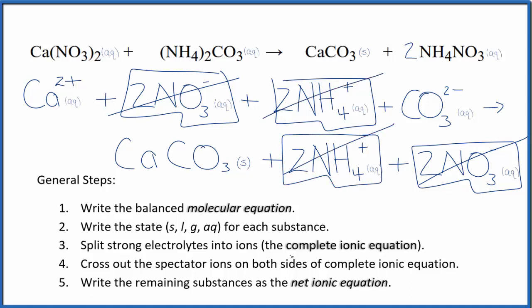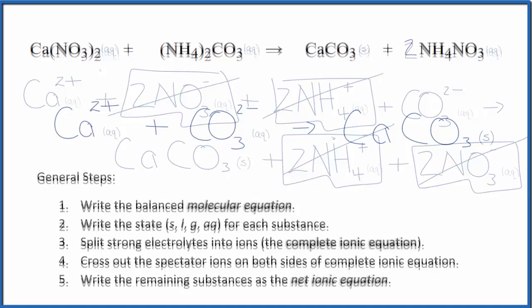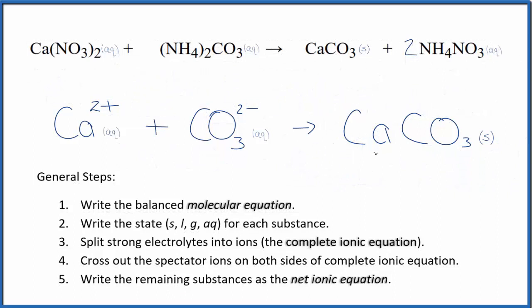What's left is the net ionic equation. What's left is the balanced net ionic equation for calcium nitrate plus ammonium carbonate. Let's remove the spectator ions. And this is the balanced net ionic equation.